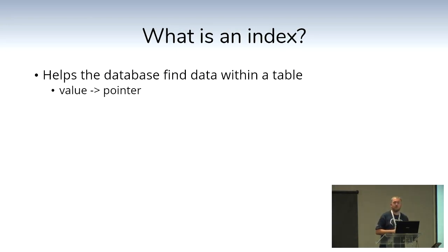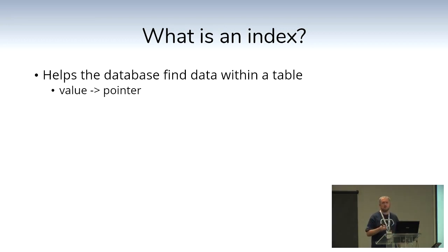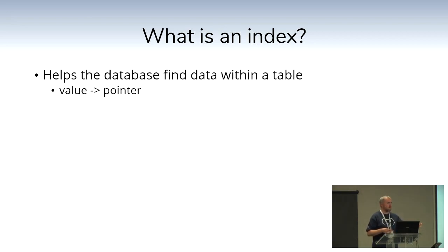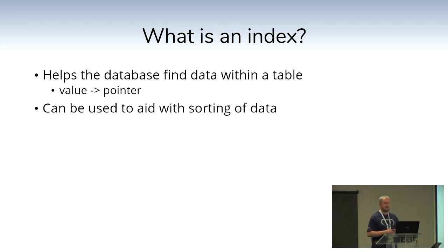What is an index? In simple terms, it helps the database find data within a table. Without an index you'd have to scan the table from beginning to end. An index is by definition something that's very fast to search through to get a value, which then points to the places in the table store where you can find the record — it points to a block in a file, and then it's easy to obtain that data.